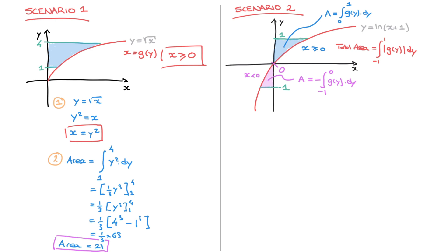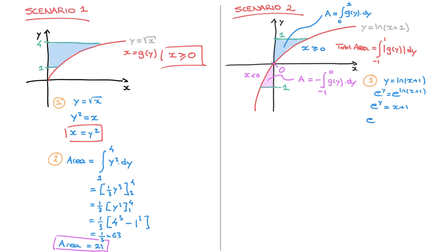Let's calculate the total area. First, I need to rearrange y equals ln of x plus one to make x the subject. To get x outside of the ln function, I use the fact that if y equals ln of x plus one, then e to the y equals e to the ln of x plus one. Since e and ln are inverse functions, they cancel, giving e to the y equals x plus one. Subtracting one from both sides gives e to the y minus one equals x — in other words, x equals e to the y minus one. That's step one done.